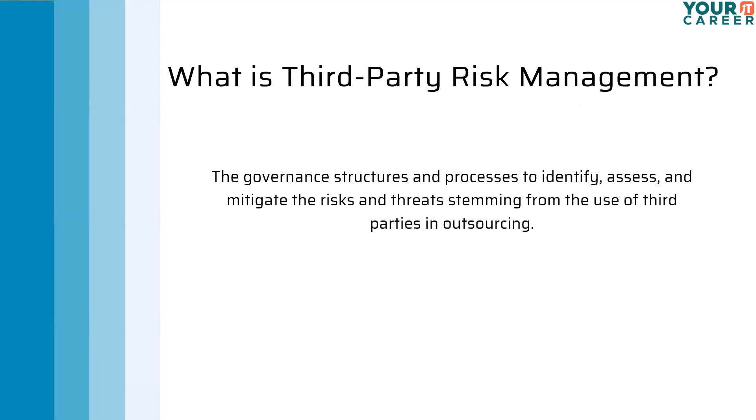Third-party risk management — the formal definition — refers to the structures and processes that are in place and used to identify, assess, and mitigate the risks and threats stemming from the use of third parties in outsourcing. When an organization chooses to outsource some services to a third party, risks inherently come up, and third-party risk management is how those risks are identified, assessed, and mitigated.